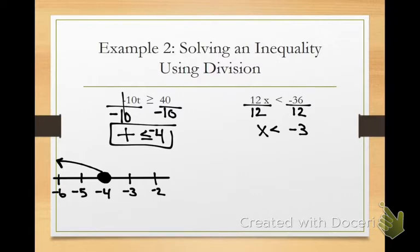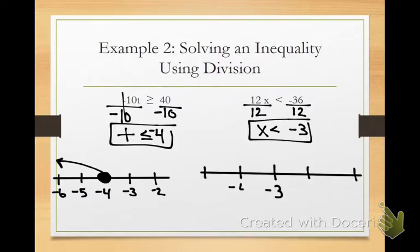So now that X is less than negative 3, it will be an open dot on the negative 3 and an arrow going left. Questions, guys? Any questions? All right. Go ahead and turn in your books. I believe it's going to be page 144.